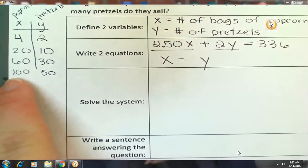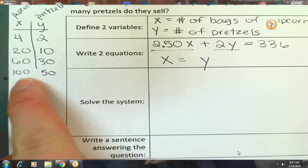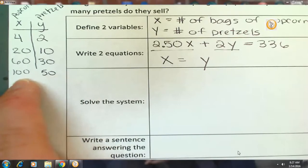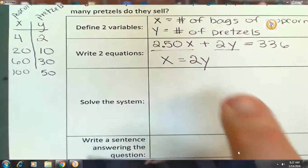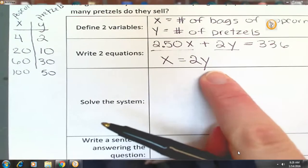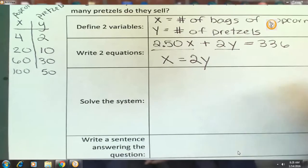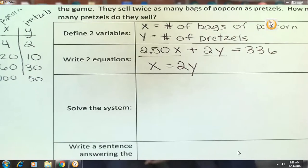So let's say they sold 100 bags of popcorn. We know that's twice the number of pretzels, correct? So if we take 2 times 50, that would give us the number of bags of popcorn, right? That's essentially what we're doing. We're taking 2 times the number of pretzels to give us our popcorn. That's as complicated as that equation is going to get. That's it. X equals 2Y.